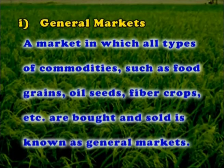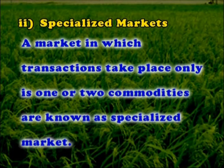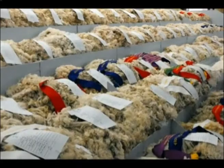Classification based on commodity includes two aspects: number of commodities and nature of commodity. A market may be general or specialized based on the number of commodities transacted. General markets deal in all types of commodities such as food grains, oil seeds, and fiber crops. Specialized markets are those in which transactions take place in only one or two commodities — examples include food grain markets, vegetable markets, wool markets, and cotton markets.